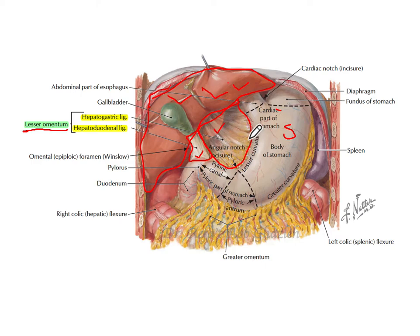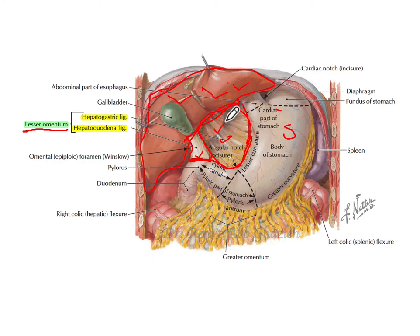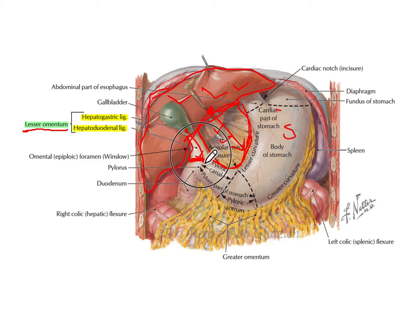It is known as the lesser omentum because it connects the lesser curvature of the stomach and the first part of the duodenum to the liver. This part is known as the hepatogastric ligament, and this is the hepatoduodenal ligament. Both of them together make the lesser omentum.